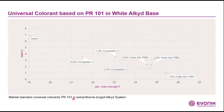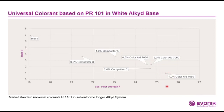Here is the same comparison against other compatibilizers on the market. You can see that already 1% of Color Aid 7060 is sufficient to achieve low Delta E and high color strength, while 2% of competitor C is required — quite a high dosage. You can also see that too much compatibilizer does not help: increasing the dosage of Color Aid 7060 actually increases the Delta E again, so there is an optimal dosage that has to be met to get the best performance, and this is not always the highest dosage.